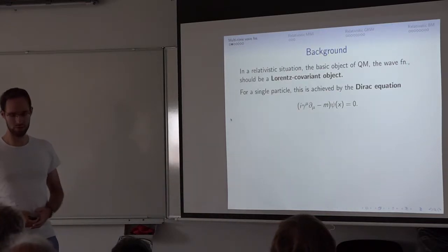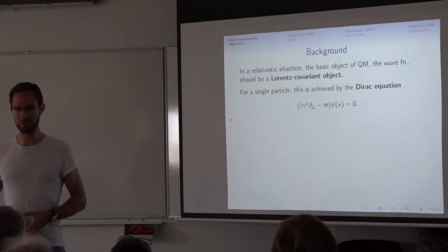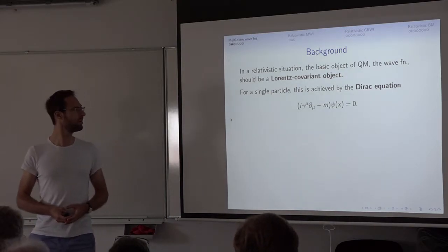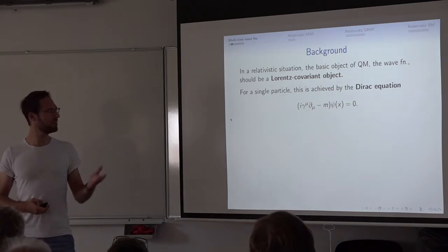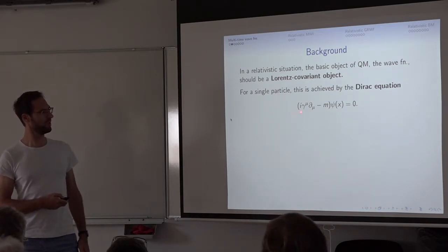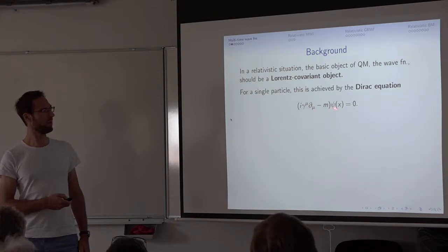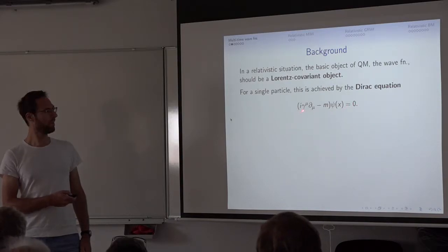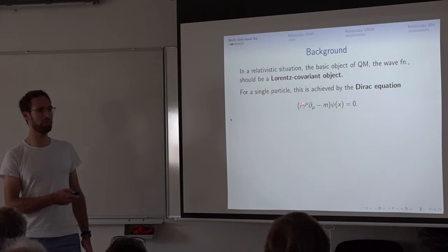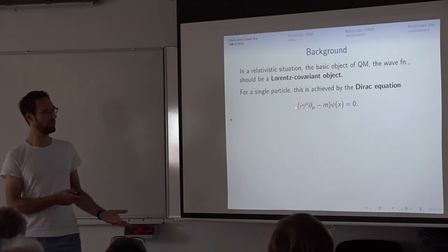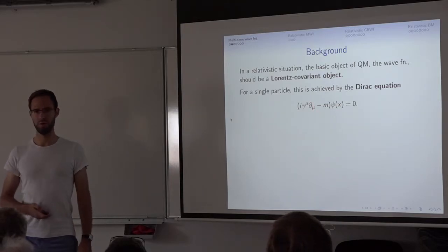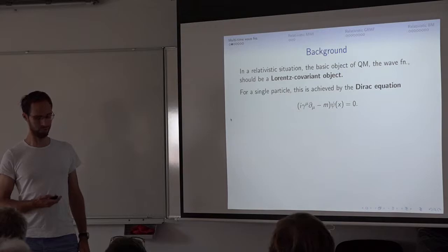In a relativistic situation, the basic object of quantum mechanics — the wave function — should also be a relativistic object. For a single particle, this is nicely achieved by the Dirac equation, which I've written here: i γ^μ ∂_μ − m acting on ψ(x) equals zero, where x is your element of spacetime. These gamma matrices are four-by-four matrices satisfying special relations such that this equation will really be Lorentz covariant. And ∂_μ is the derivative with respect to the μ-th coordinate of x.